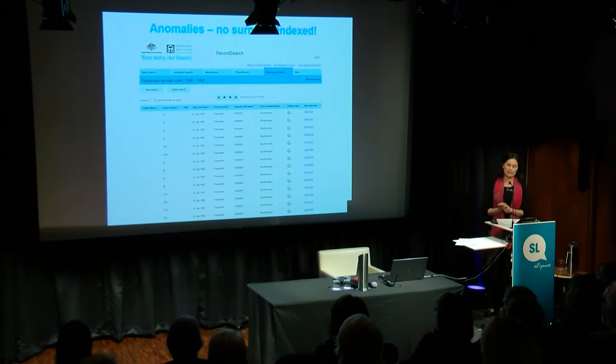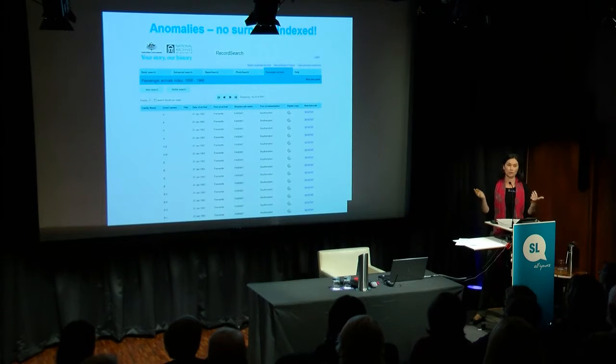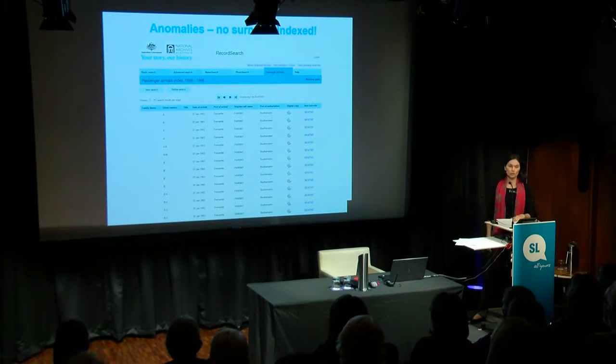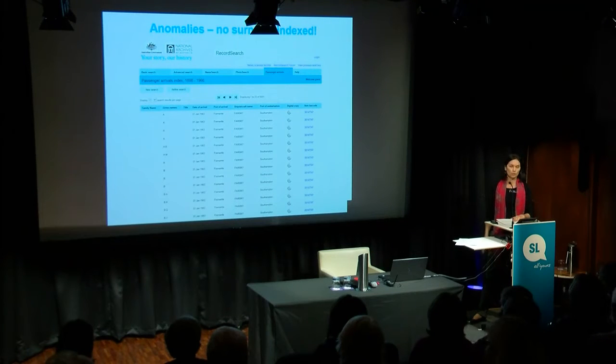I recently had a client in our reading room who wanted to find his own passenger arrival record. He knew the date of arrival and the name of the ship, so I thought this was going to be an easy one. We looked up his name on the passenger index but nothing came up. After some detective work, I realised that the surname for the ship he arrived on was not indexed for some reason — so entering a surname was not going to help at all. This just highlights the difficulty in searching for passenger records. Even when you have the information and think it's going to be straightforward, you really need to try all search possibilities, including different spellings, and then look elsewhere.